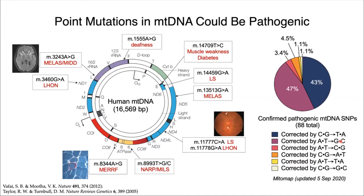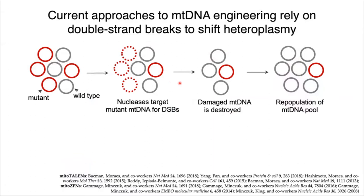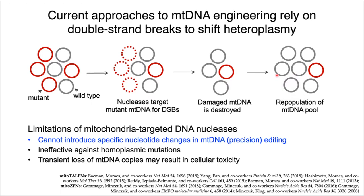Current approaches to mitochondrial DNA engineering mostly rely on using nucleases to selectively target the mutant DNA for double-strand breaks, thereby resulting in its destruction. The cell then repopulates its mitochondrial DNA pool by using the remaining wild-type DNA copies as a template for replication. While this method has been very effective in altering the heteroplasmy of a cell in favor of wild-type healthy DNA copies, they cannot be used to introduce specific nucleotide changes in the mitochondrial DNA, or what we term as precision genome editing.